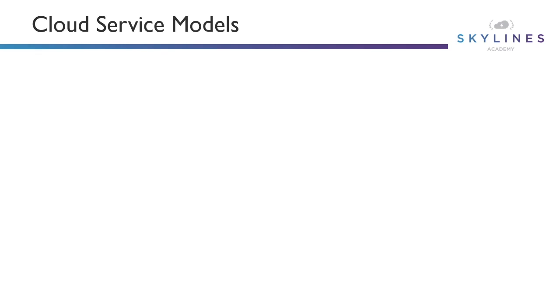Inside of Cloud Computing, there are now multiple service models you'll hear people talk about as they deploy services. The two common ones being IaaS and PaaS — the big acronyms you need to know.